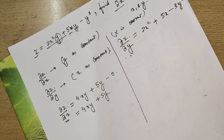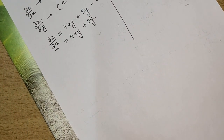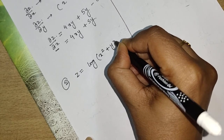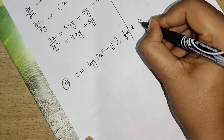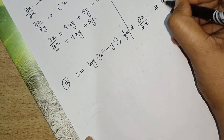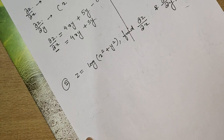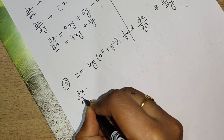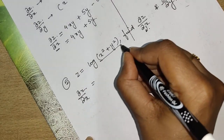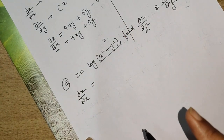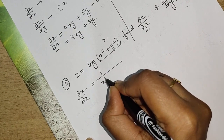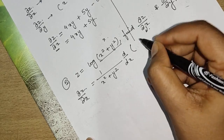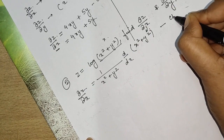Let's move to the second question: z = log(x² + y²). Our objective is to find ∂z/∂x and ∂z/∂y. For ∂z/∂x: as you know the derivative of log is 1 over the argument, so we get 1/(x² + y²) and we differentiate what is inside the bracket with respect to x according to the chain rule.